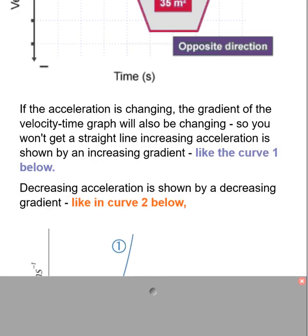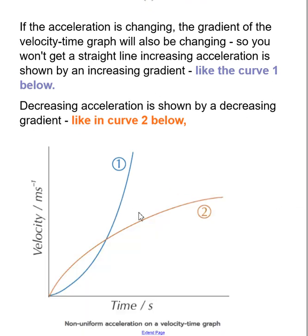If the curve is not a straight line, what does it mean? If acceleration is changing and not constant, the gradient of the velocity-time graph will be changing. An upward curve means increasing gradient. A downward curve means decreasing gradient. You have to remember these two shapes.